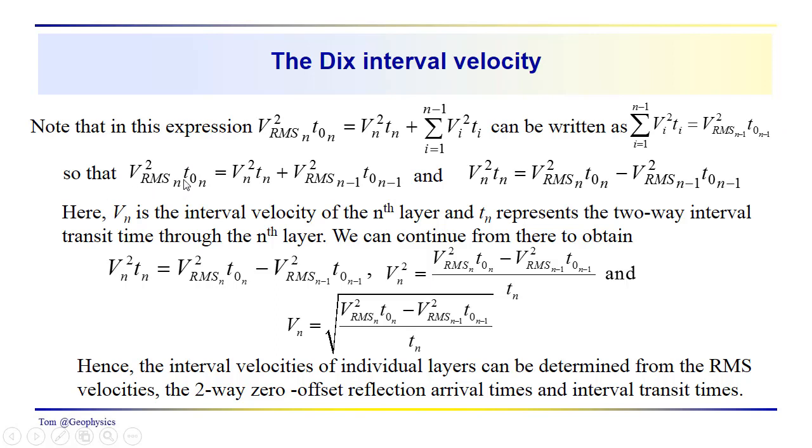So VRMS_n squared t_0n is equal to the sum of these two terms. We have our VRMS_{n-1} squared t_{0,n-1}, and we have this term that we pulled out. And then we're just going to rearrange these terms and divide both sides by t_0n.